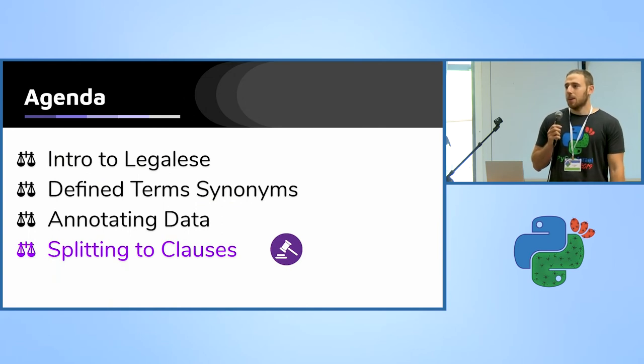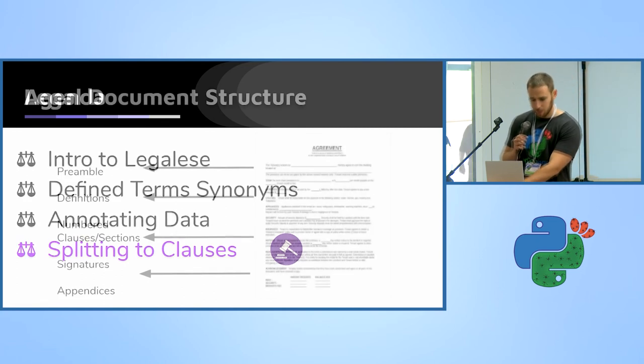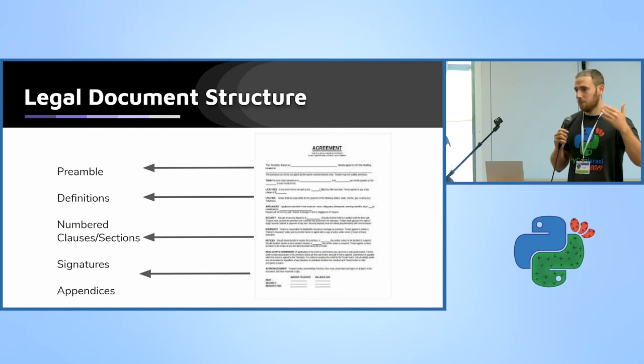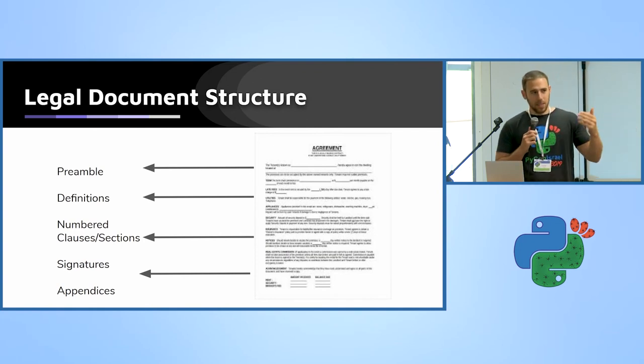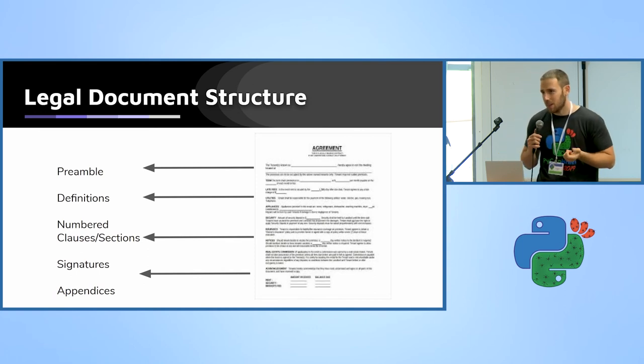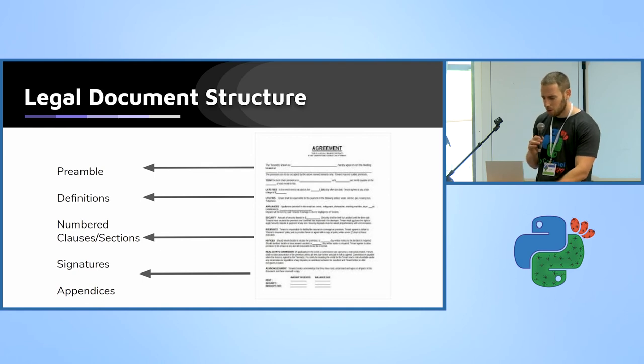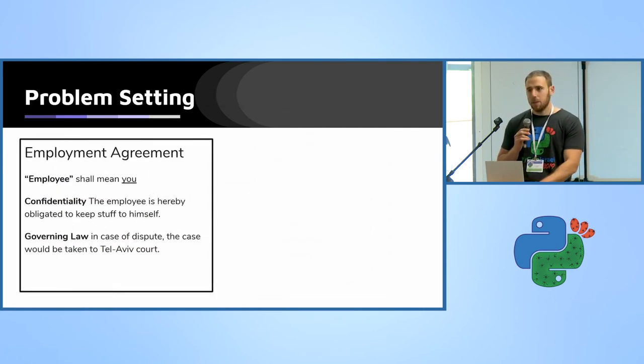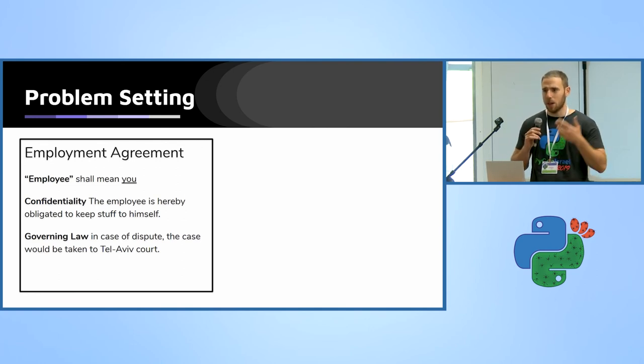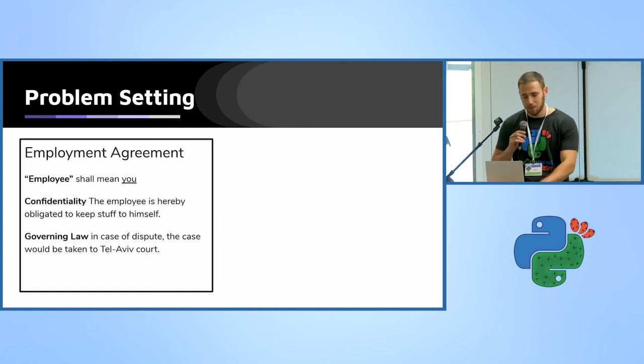Our last use case is splitting a document into clauses. So as we've seen earlier, this is the general structure of a legal document. And aside from the defined terms, you also want to split it into clauses in a way that makes sense. Usually formatting helps a lot, so usually each clause starts with enumeration and some kind of formatting other than underline or bold. But unfortunately, formatting is not always consistent, and also a small amount of the documents are not formatted at all or formatted in some very weird way with uppercase and question marks. People are very creative.